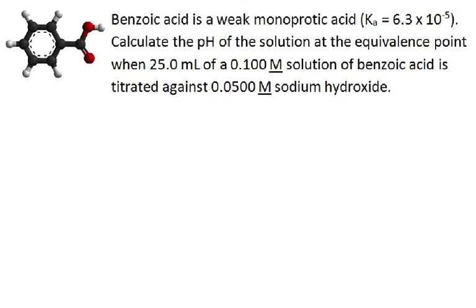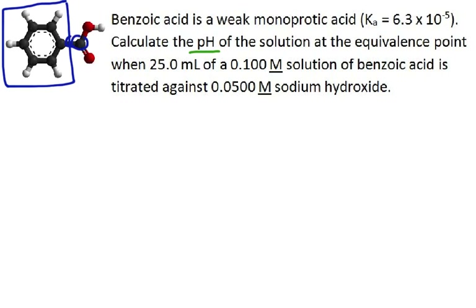Here's a problem. Benzoic acid is a weak monoprotic acid, and the Ka is 6.3 times 10 to the minus 5. Calculate the pH of the solution at the equivalence point when we titrate 25 milliliters of 0.1 molar benzoic acid against sodium hydroxide, a strong base, which is 0.0500 molar. Benzoic acid has a benzene ring, C₆H₆, except one of the H's is connected to another carbon, and then we have a COOH group.